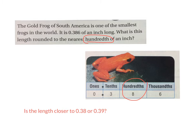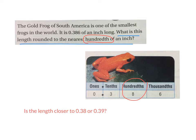So in your workbook and on the screen, you can see it's telling you about the gold frog of South America. It's one of the smallest frogs in the world. It's only 0.386 of an inch long — so it's really, really small, about the size of a centimeter. The question asks: what is the length rounded to the nearest hundredth of an inch?